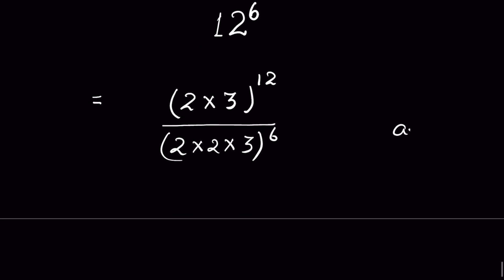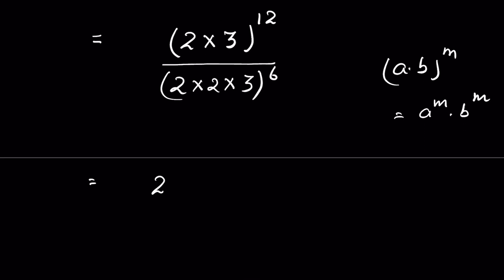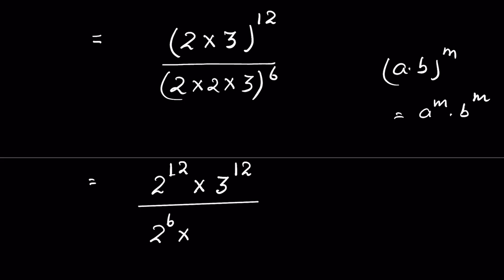Now when (a times b) whole to the power m, it is equal to a to the power m times b to the power m. Therefore it will be 2 to the power 12 times 3 to the power 12, upon 2 to the power 6 times 2 to the power 6 times 3 to the power 6.